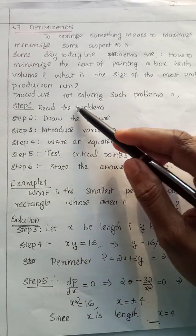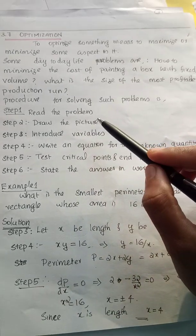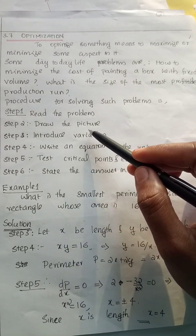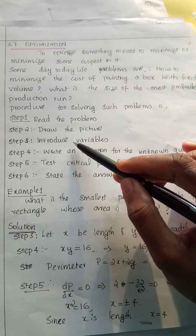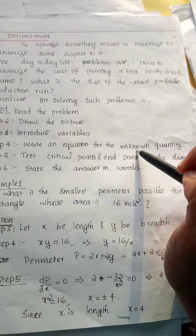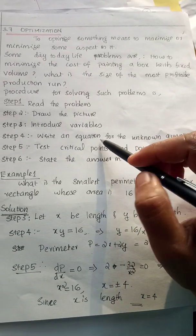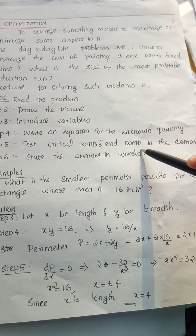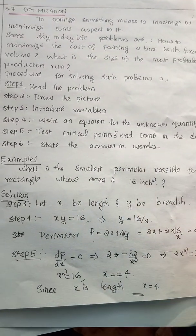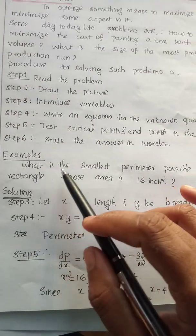These are the guidelines to solve optimization problems: read the problem carefully, draw a picture corresponding to and describing the problem, introduce variables to solve the problem, write an equation for the unknown quantity you need to find, test the critical points and endpoints in the domain, and finally state the answer in words.